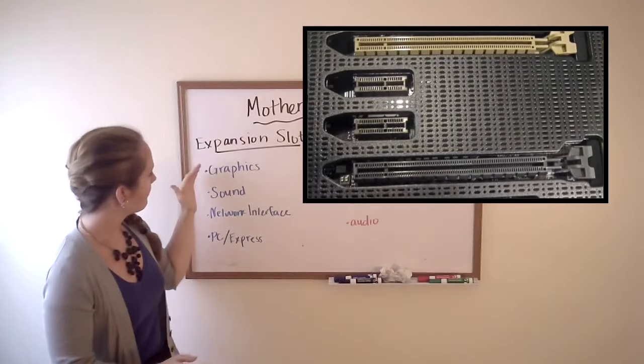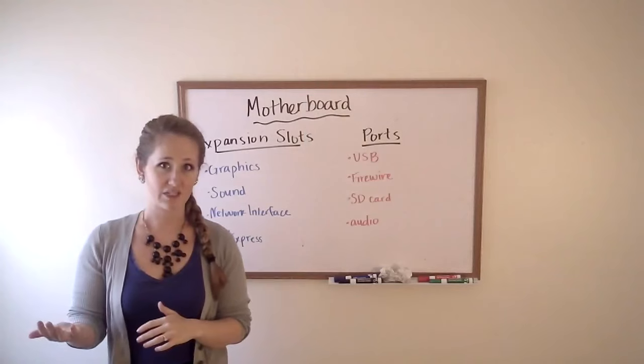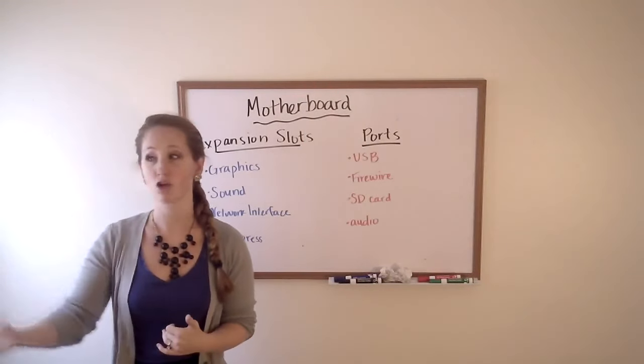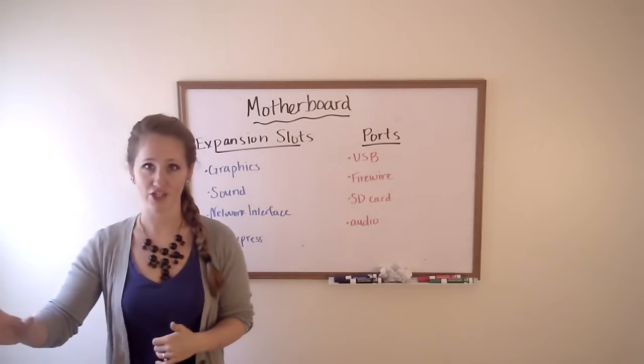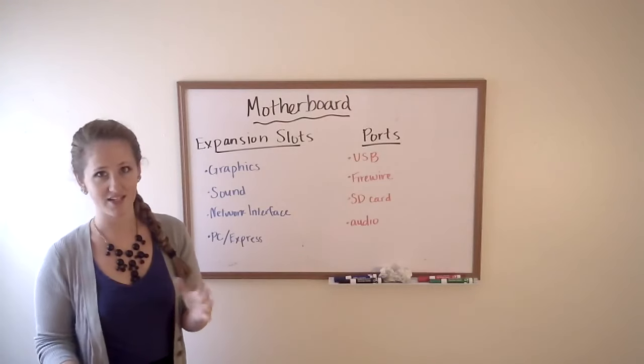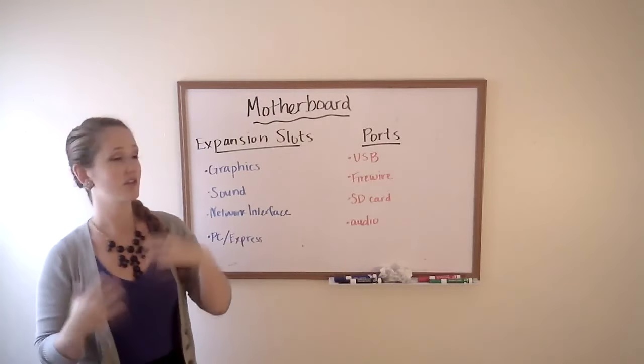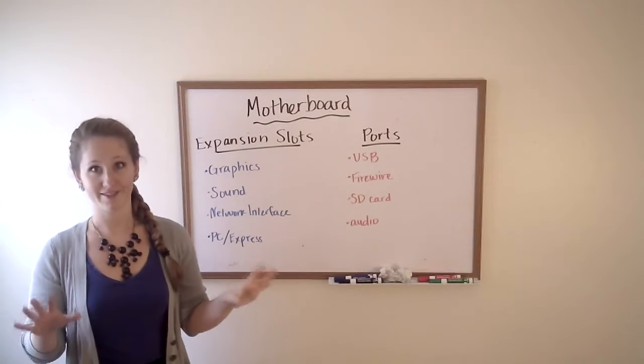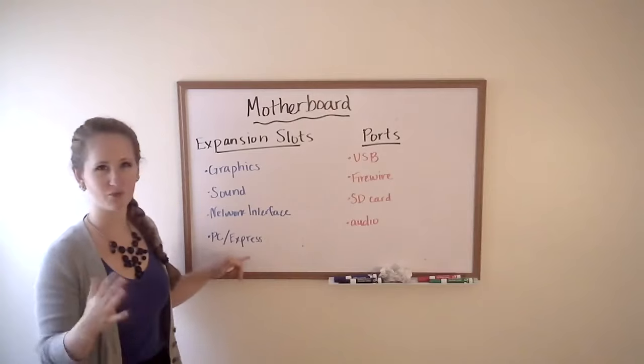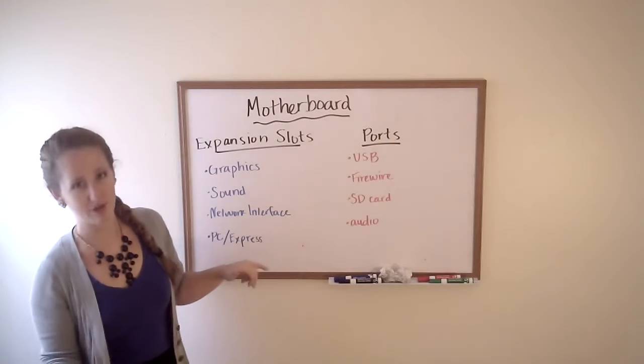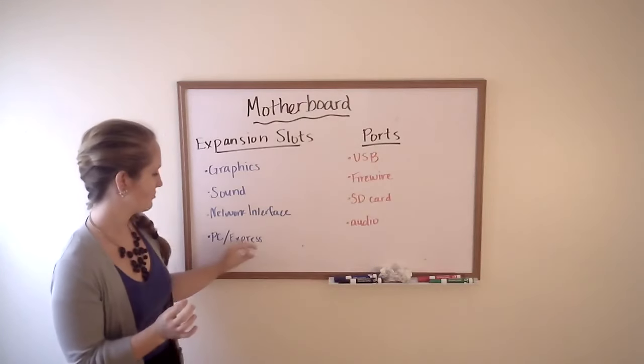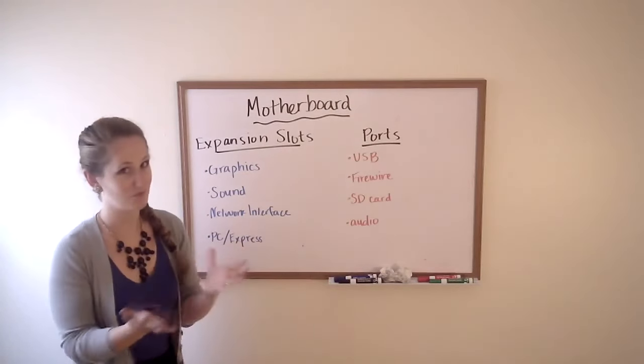Now, expansion slots are where you put anything that can increase the performance of the computer without putting more load on the CPU. For example, a graphics or a sound card would up your user experience by giving you better video or better sound quality, but it wouldn't slow down anything that the CPU had to do. A network interface card could also go in an expansion slot. This would help your computer connect with the networks around it. We'll talk about networks a little bit more in videos coming up. Now, a PC card, which has really been turned mostly over to Express cards, are found primarily in laptops. Because of the size, Express card is better. It's just much smaller.